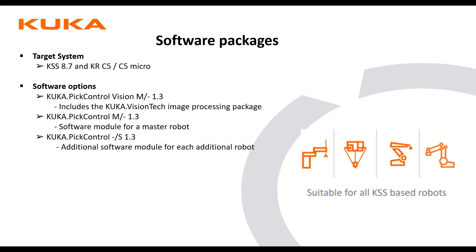For the software packages, our target system software is KUKA System Software 8.7, which uses the KRC5 or KRC5 micro. There are a couple of different versions of our PIC control package. One is PIC Control Vision, which includes Vision Tech and the image processing computer and our camera. KUKA is very agnostic, so if you already have your own vision system and camera, we can bring that in and you can just use PIC Control 1.3 without the vision. The last one is PIC Control Slave, used for when you have multiple robots on your line, and it helps communicate with the IPC, the controller of all the robots on the line.